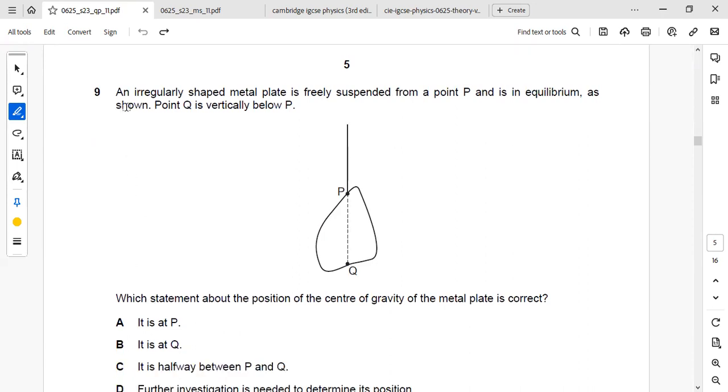We will move to the next question. An irregularly shaped metal plate is freely suspended from a point P and is in equilibrium as shown. Point Q is vertically below P. Which statement about the position of center of gravity of the metal plate is correct?